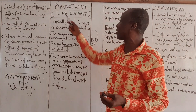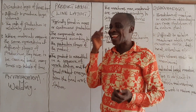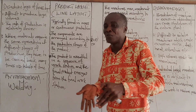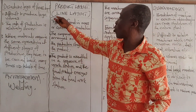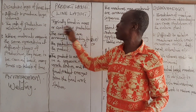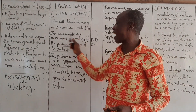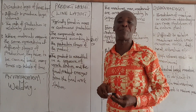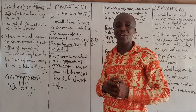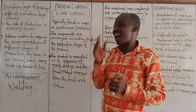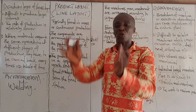The product layout is also called line layout, and the name tells you something — it moves in line according to a sequence of operations. It is typically found in mass or continuous production. The components — the various workstations — are arranged according to the production stages of the product.